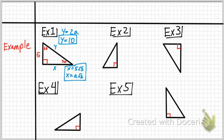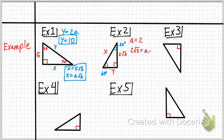In example 2, x is the hypotenuse, y is the short leg, and I'm given that the long leg is 2√3. Since the long leg equals A√3, and 2√3 equals A√3, A equals 2. Now knowing A equals 2, y equals A so y equals 2. And x equals 2A, so x equals 4.